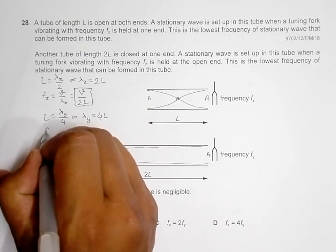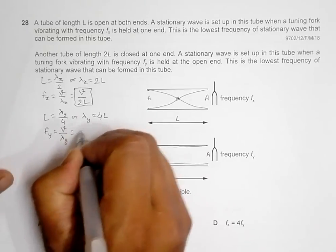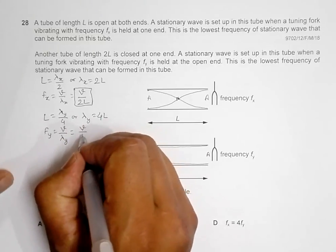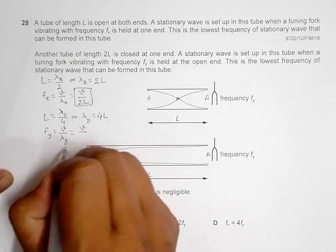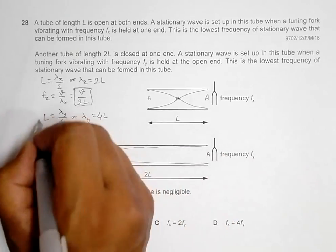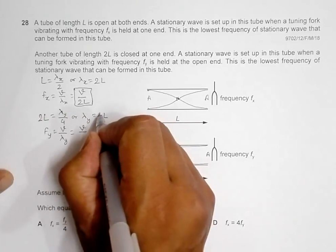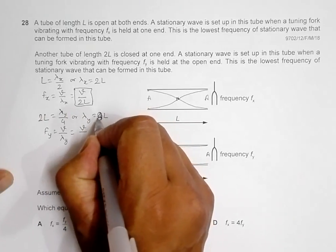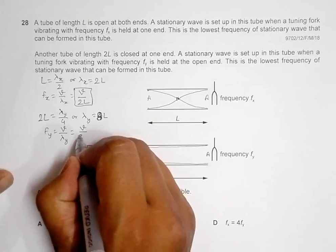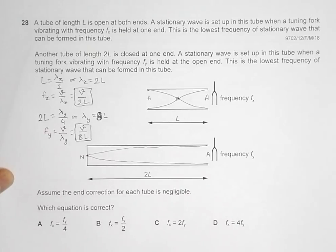So frequency fy is equal to velocity divided by λy, which equals velocity divided by 8L. The length is twice L, so λy is 8L and therefore fy equals V divided by 8L.